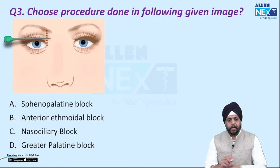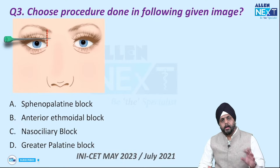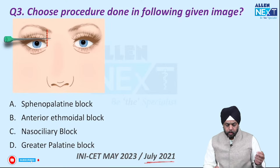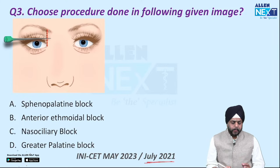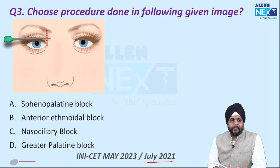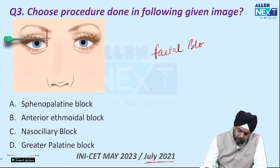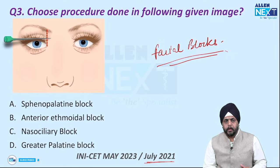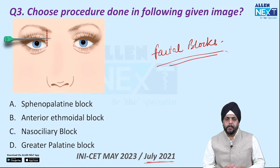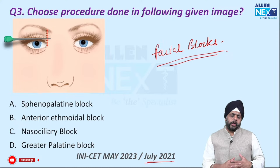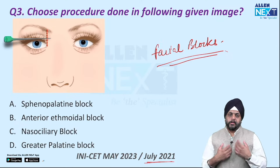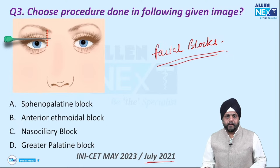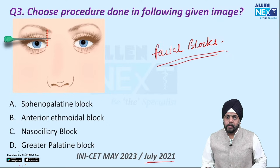Next question: choose the procedure done in the following image. This question was repeated — given in July 2021 and again in May 2023. The four options were sphenopalatine block, anterior ethmoidal block, nasociliary block, and greater palatine block. These facial blocks are a grey area between ophthalmology and ENT. Some are used for oculoplastic surgeries, some for rhinoplasty and facial plastic surgeries — but neither specialty typically teaches them to students.